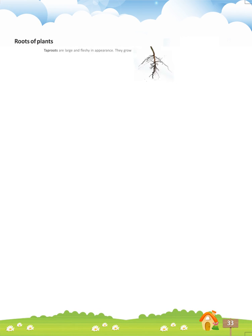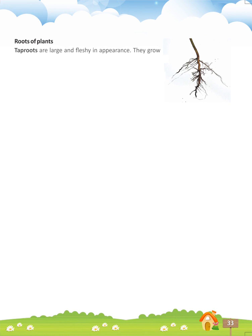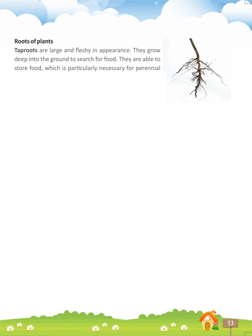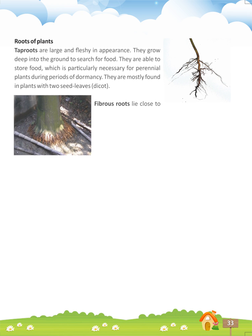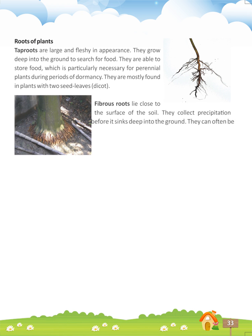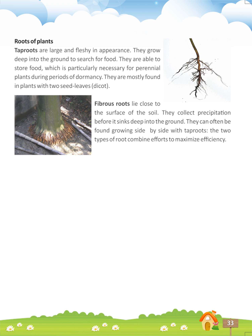Roots of plants. Tap roots are large and fleshy in appearance. They grow deep into the ground to search for food. They are able to store food, which is particularly necessary for perennial plants during periods of dormancy. They are mostly found in plants with two seed leaves — dicots. Fibrous roots lie close to the surface of the soil. They collect precipitation before it sinks deep into the ground. They can often be found growing side by side with tap roots. The two types of root combine efforts to maximize efficiency.